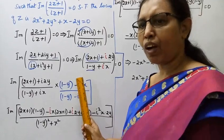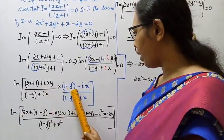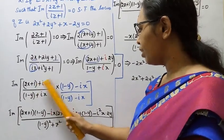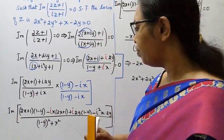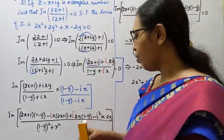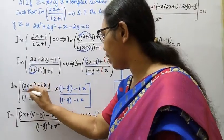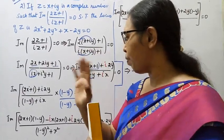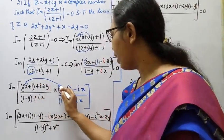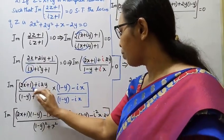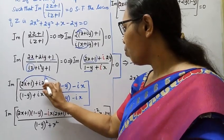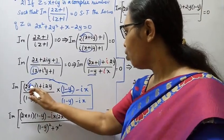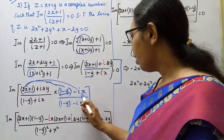Multiply numerator and denominator by the conjugate of the denominator. The conjugate of (1 minus y plus ix) is (1 minus y minus ix). So we multiply both numerator and denominator by (1 minus y minus ix). The numerator terms include (2x plus 1) into (1 minus y) and (2x plus 1) into ix.